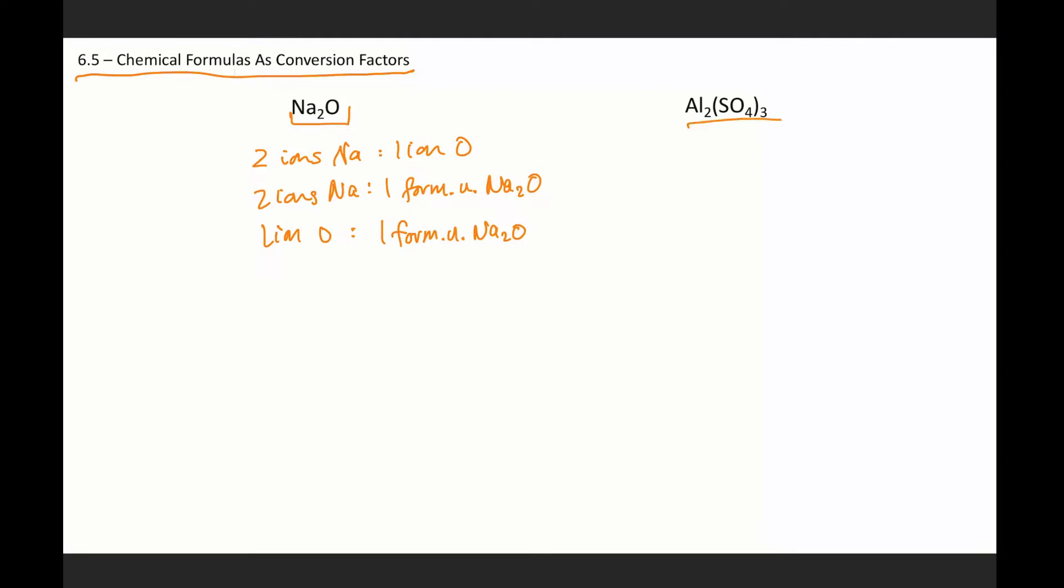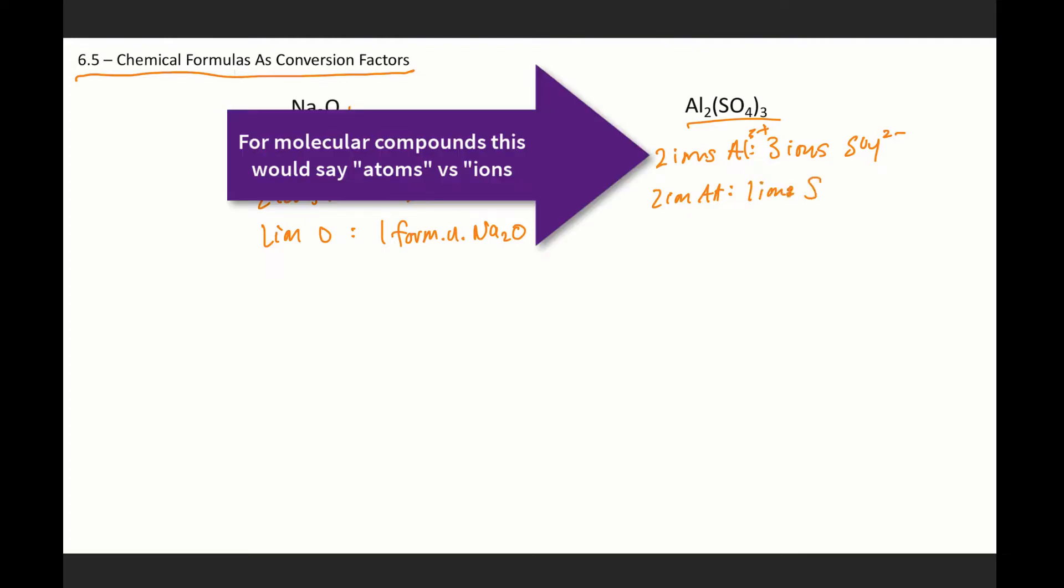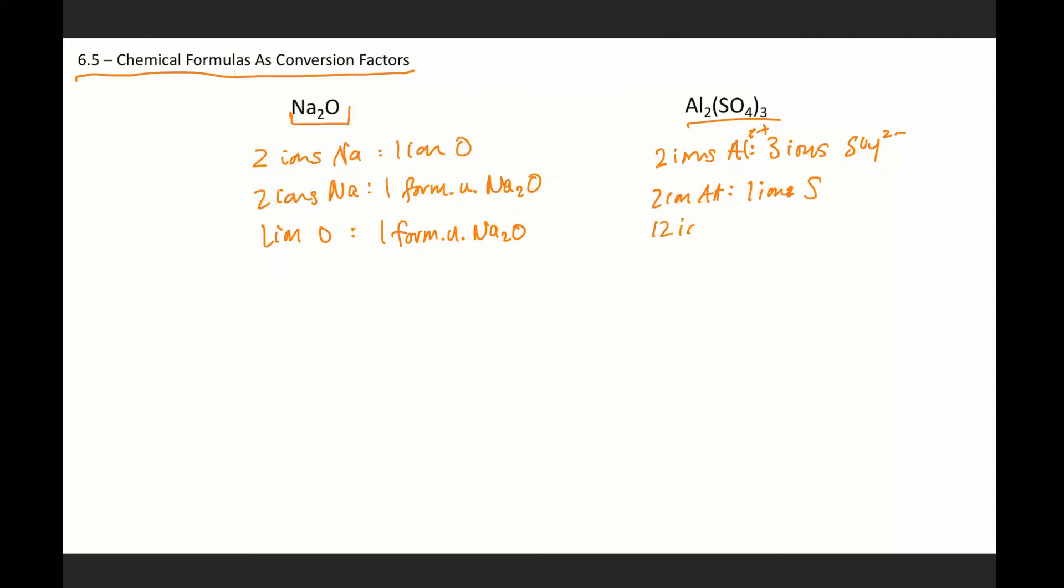Likewise, for this formula, I could say that there are two ions of aluminum for every three ions of SO4. We could also say that there are two ions of aluminum for every one ion of sulfur. And the list goes on. We could say that there are 12 ions of oxygen for every two ions of aluminum, and we could write a few more.